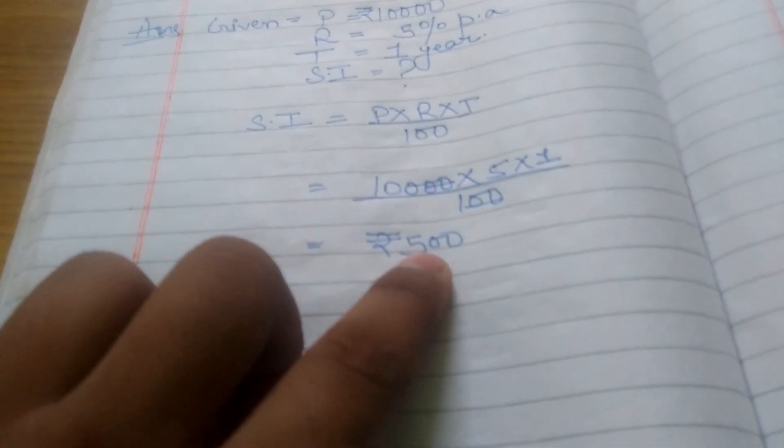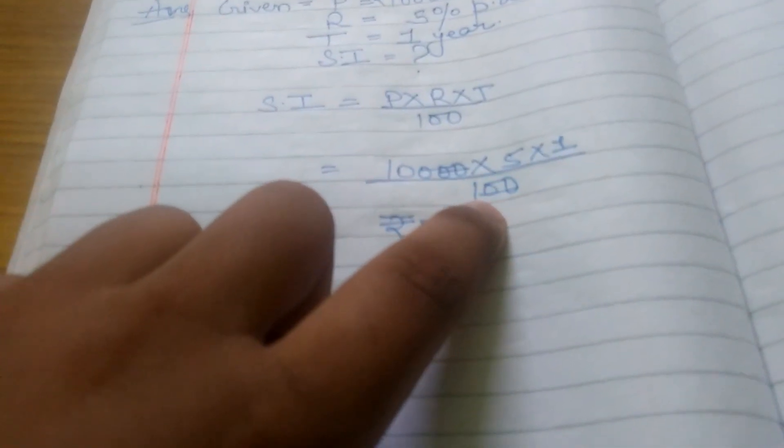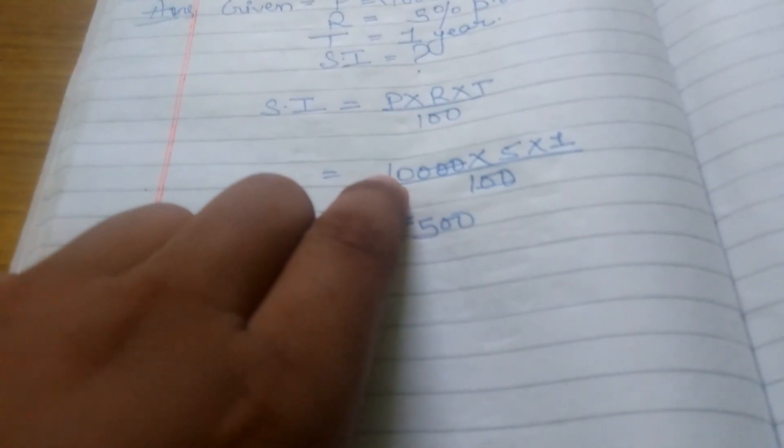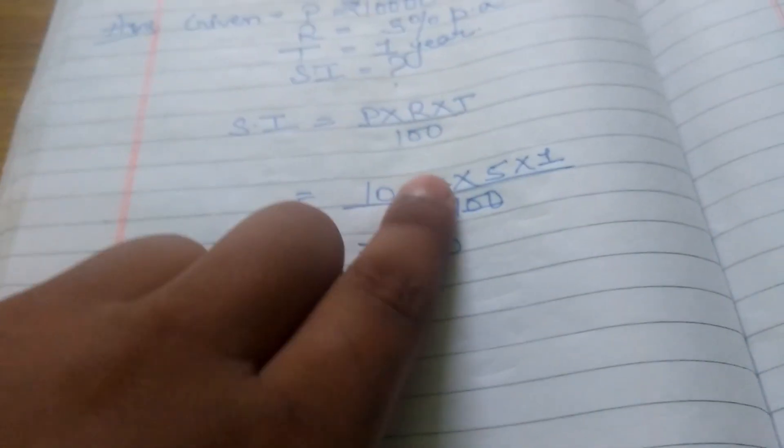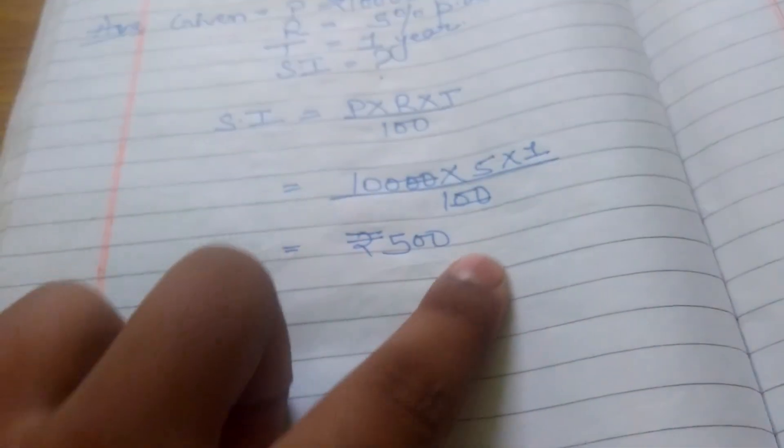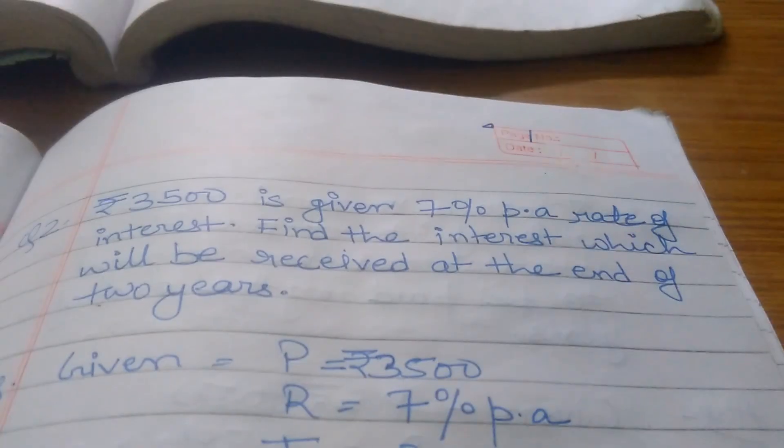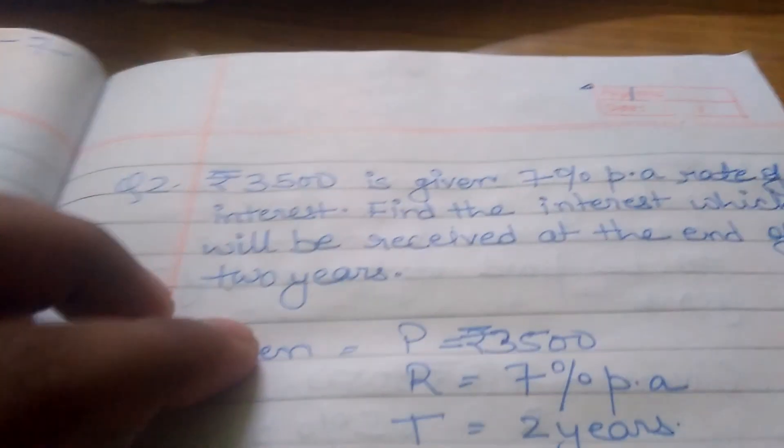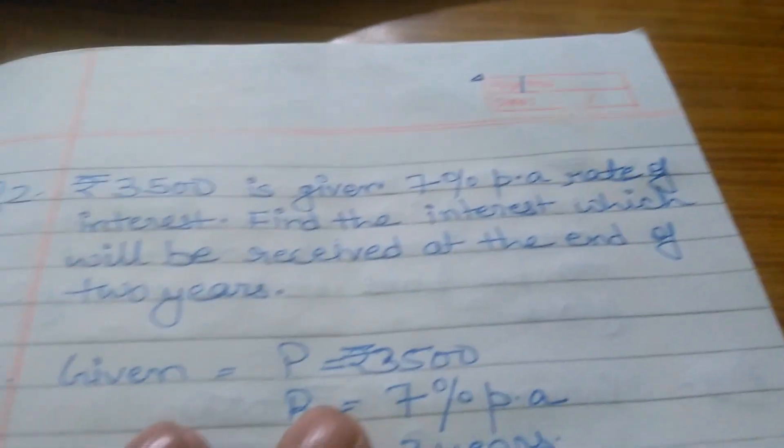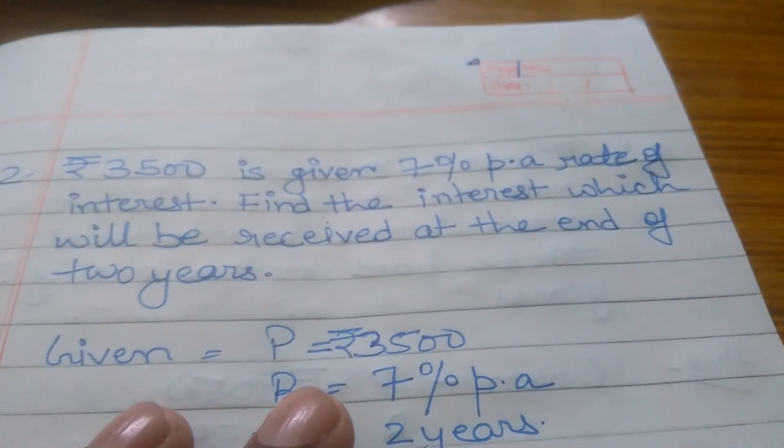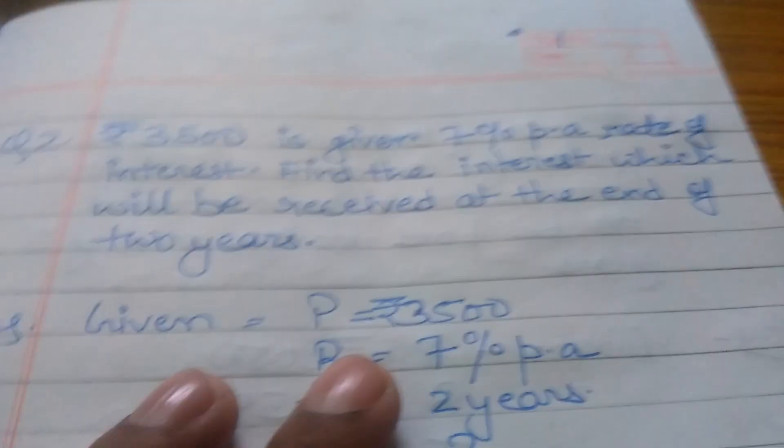So 10,000 × 5 × 1 ÷ 100. Then 10,000 will be divided by 100, so there will be 100 × 5 × 1, which equals ₹500. This is the Simple Interest. The second question is: ₹3,500 is given at 7% per annum rate of interest. Find the interest which will be received at the end of two years.